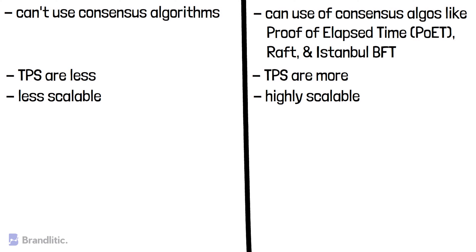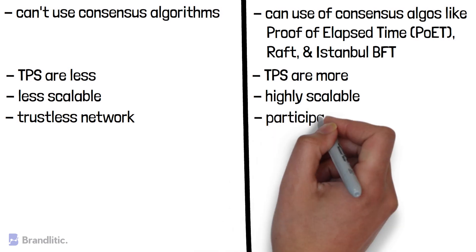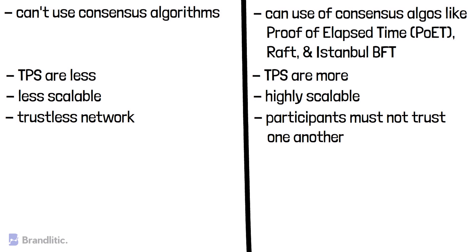Next, public blockchains are trustless, and usually in a private blockchain setup, participants must not trust one another. Simply because in a private blockchain, the validity of records cannot be independently verified, as the integrity of a private network relies on the credibility of the authorized nodes.